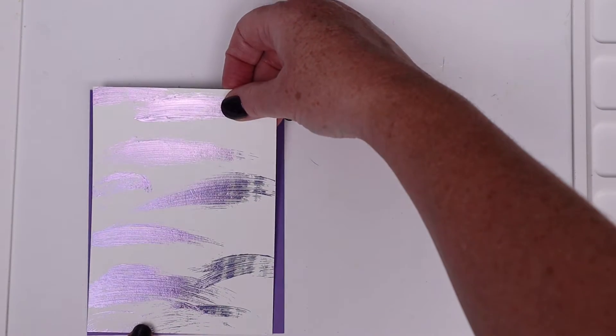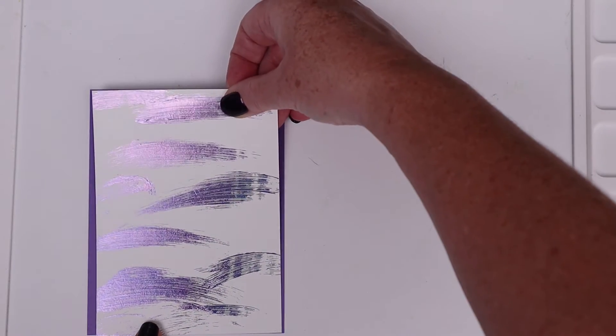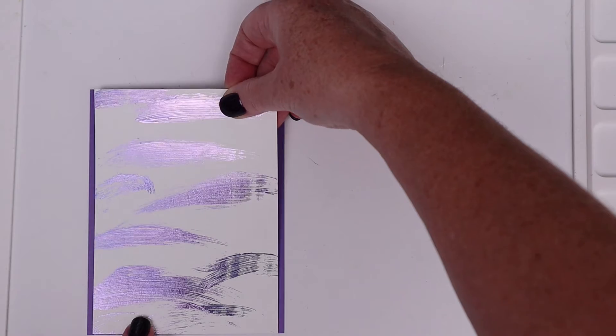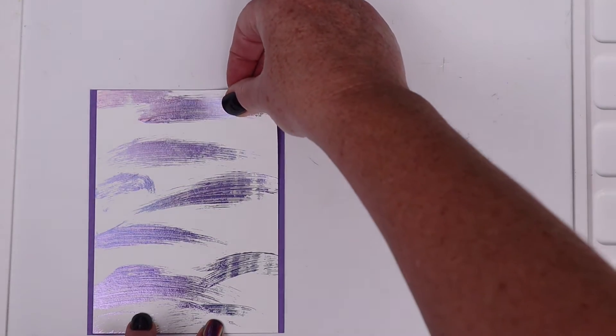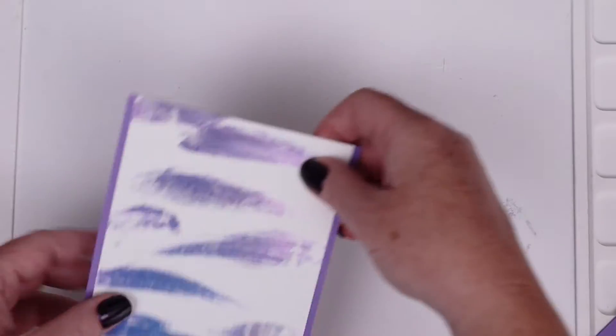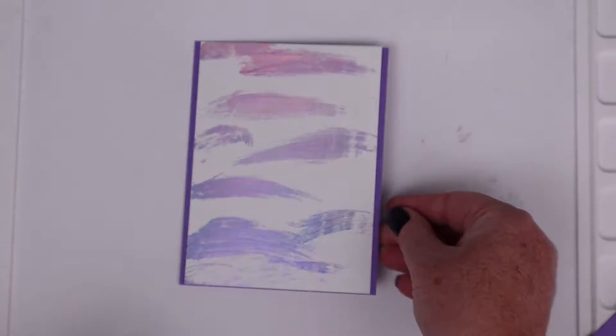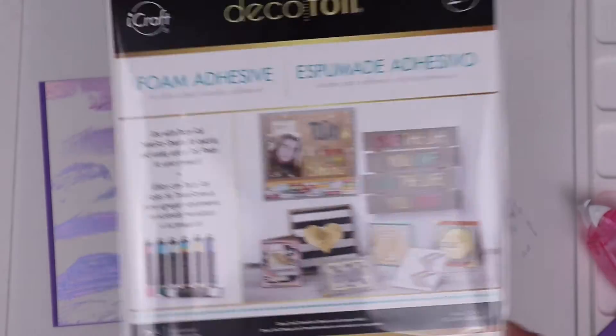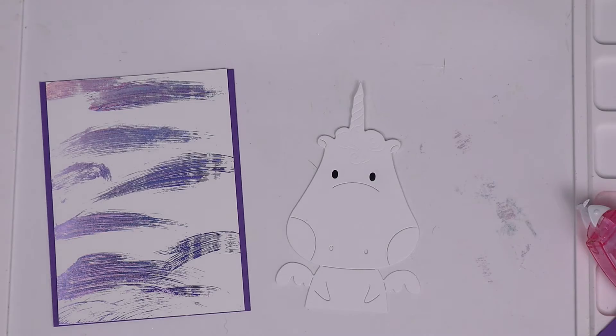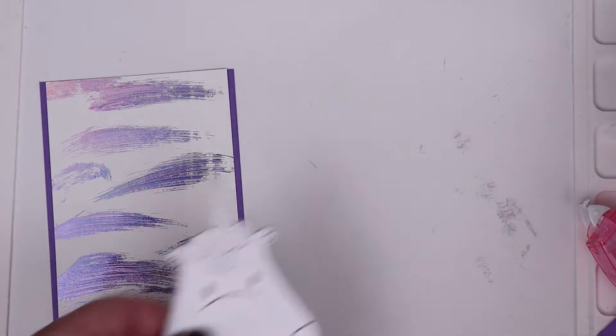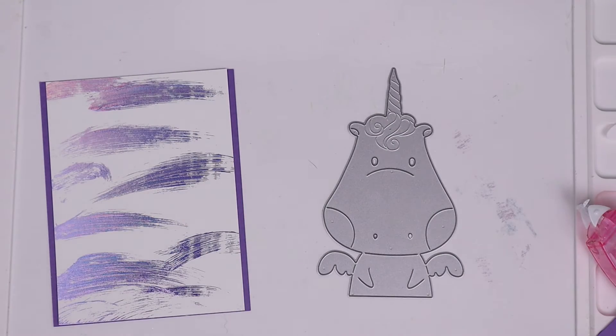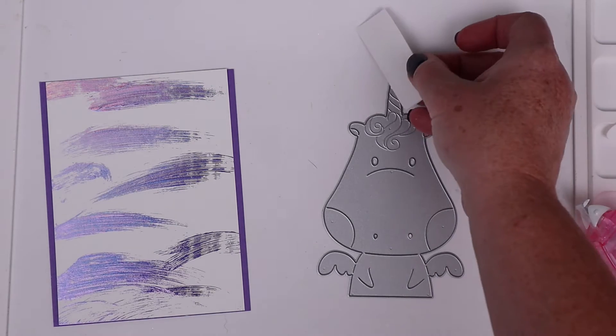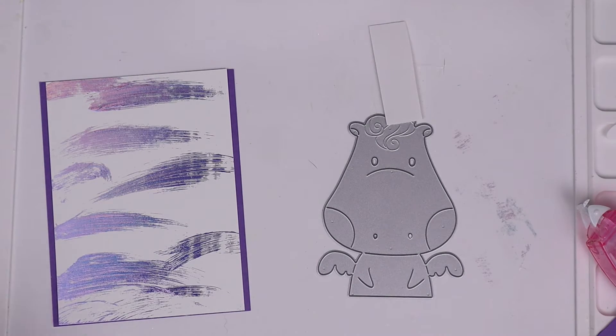For the last card, here is the Prince Periwinkle paint swipes. I did cut this down a little bit so that I could mount it on a piece of dark purple cardstock. I felt like the dark purple with the periwinkle foil just really made it pop. I just absolutely love that, you can see all the shine there. I'm going to use some of the iCraft Deco Foil double-sided foam adhesive for some of the parts of my unicorn here.